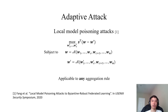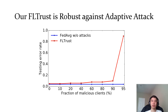The attacker does this by replacing the aggregation rule in the optimization problem with that of FLTrust. This figure shows that our FLTrust is also robust against such adaptive attacks. The x-axis is the fraction of malicious clients, and the y-axis is the testing error rate.